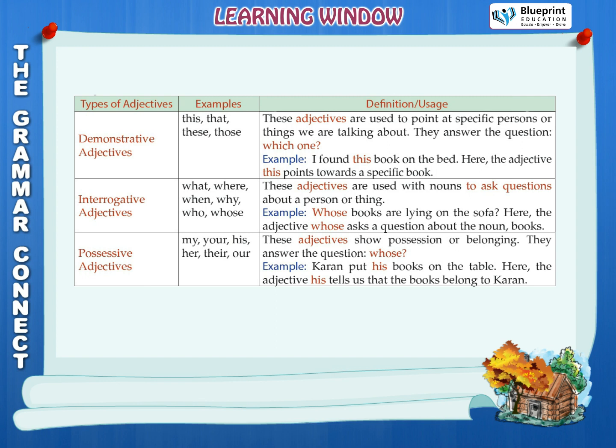Interrogative adjectives — examples: what, where, when, why, who, whose. These adjectives are used with nouns to ask questions about a person or thing. Example: Whose books are lying on the sofa? — here the adjective 'whose' asks a question about the noun 'books'.